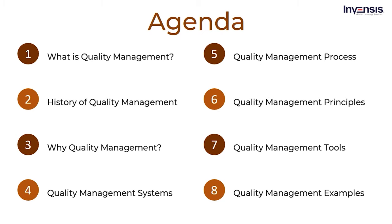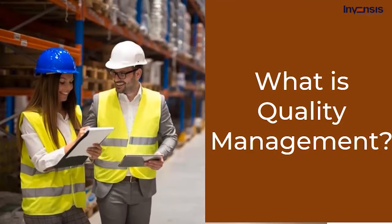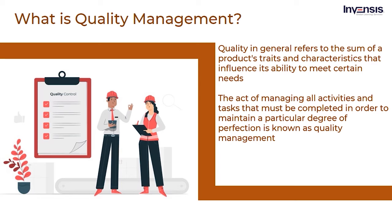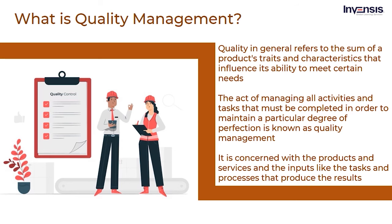Let us begin our session by discussing the main topic of today, that is, what is quality management? Quality in general refers to the sum of a product's traits and characteristics that influence its ability to meet certain needs. To achieve a goal, management entails managing and regulating a group of people or an organization. As a result, quality management entails aligning an organization's traits and characteristics. The act of managing all activities and tasks that must be completed in order to maintain a particular degree of perfection is known as quality management. It is concerned with both the quality of products and services as well as the methods used to attain it. Quality management is concerned with the products and services and the inputs like the tasks and processes that produce the results. Everything we do to ensure that our company's products and services are produced and delivered on time and budget falls under the category of quality management.